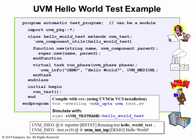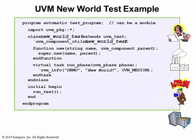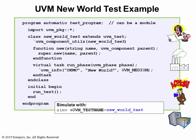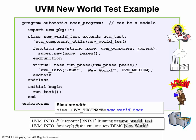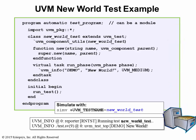What if you want to issue a different message? You can always write another test with a different message, then in simulation choose that test with a +UVM_TESTNAME switch. But that's a lot of trouble to go through when you only want to make a small change. There is a better way: the configuration database.